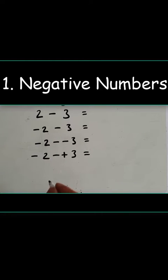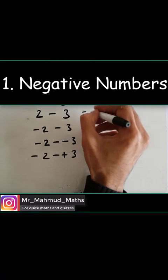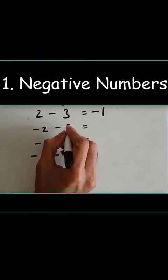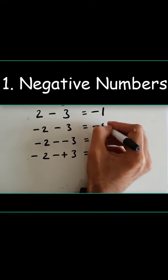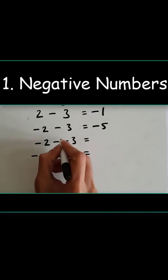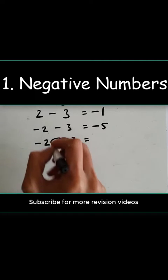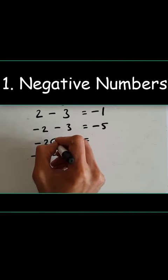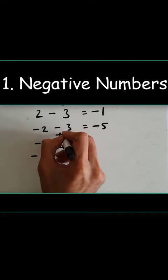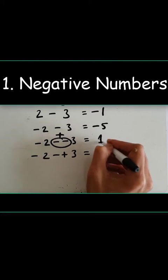First, we have negative numbers. We're going to do two take away three: 2 minus 3 equals minus one. Minus 2 minus 3 is minus five. Minus 2 minus minus 3 — when you have two negatives next to each other, they always turn into one. The rule is: negative times negative becomes positive, so minus 2 plus 3 gives us positive one.